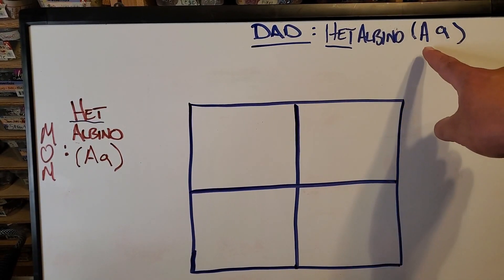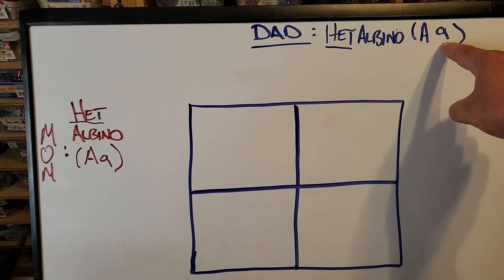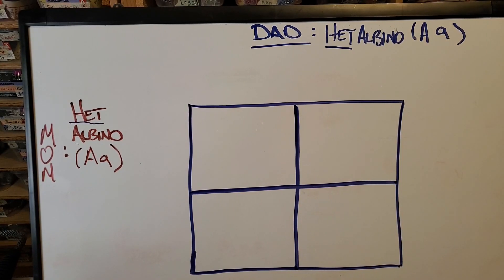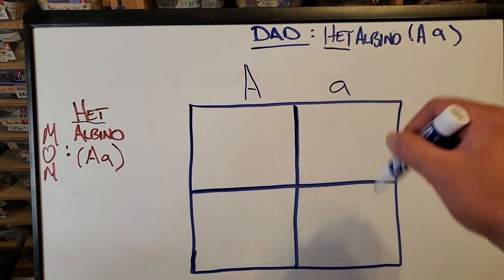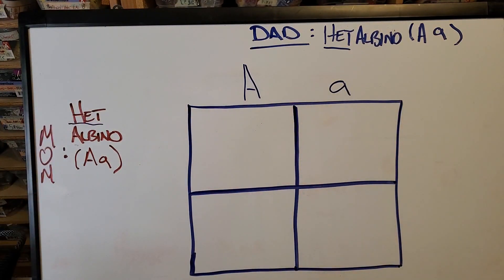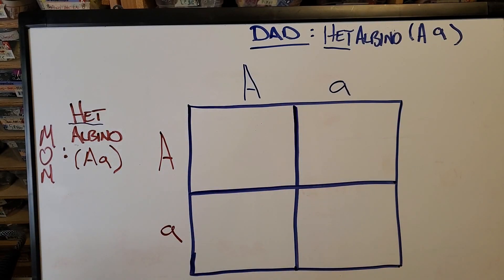And here's why. A het to het is going to be expressed in the Punnett square as capital A, which means the capital A is not carrying the recessive gene for albino. And the lowercase a is carrying the recessive gene for albino. So the dad only has one copy of the albino gene.